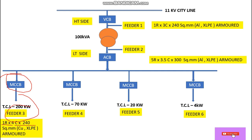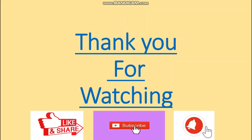In this way we can calculate the LT cable size considering the derating factor. For Feeder 3, the cable size is one run of 4-core 240 square mm copper XLPE armored cable. Hope you guys understand. Thank you for watching — please like, share, comment, and subscribe, and hit the bell icon for notifications. Thank you very much, see you in the next video.